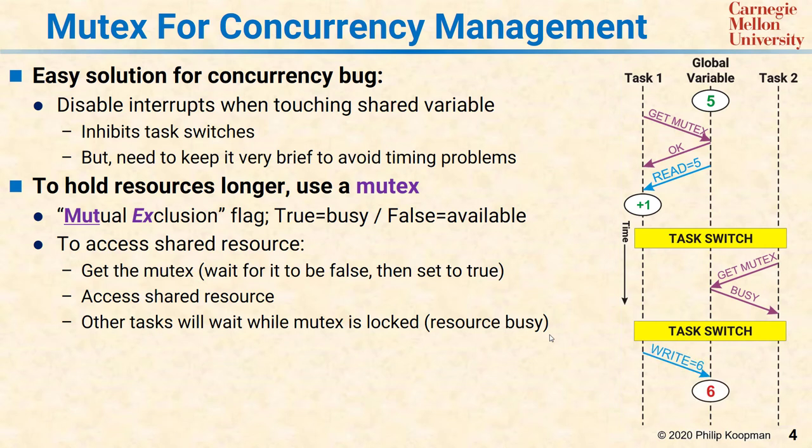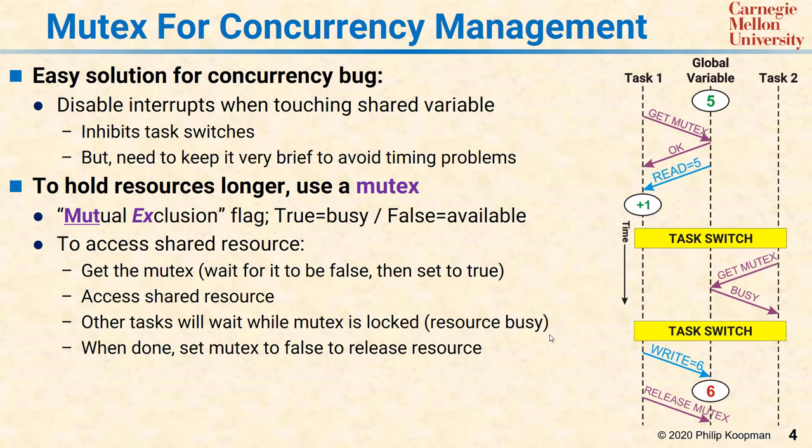Later on, the next time task 2 tries to get a task slice, it says get mutex — the mutex is free — and it'll be OK. Of course, that only happens if task 1 releases the mutex, which sets it back to false when it's done.